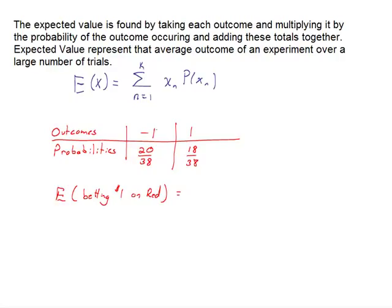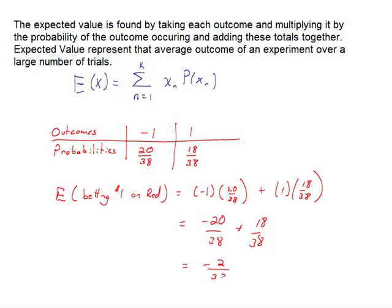The expected value of betting a dollar on red, based on the definition, says each outcome multiplied by its probability, added together. So negative 1 times 20/38 plus positive 1 times 18/38. I have negative 20/38 plus 18/38. We already have our common denominator, so this is negative 2/38, the same thing we got by theoretically playing the game 38 times and taking our average winning.